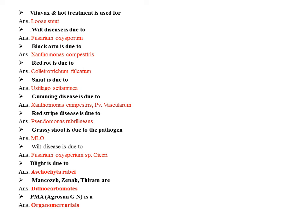Sugarcane smut is caused by Stelagocystis (Sporisorium) scitaminea. Gumming disease of sugarcane is caused by Xanthomonas tritici, pathogen variety vasculorum. Red stripe of sugarcane is caused by Pseudomonas rubrilineans. Grassy shoot disease is due to Mycoplasmas (MLOs).